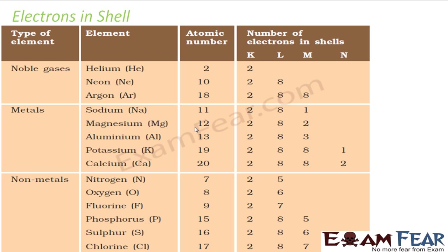Before we understand how NaCl is formed, let us understand the electron shell concept. Sodium has atomic number 11, which means it has KLM shells. Just understand this: 11 electrons are distributed as 2 in the K shell, 8 in the L shell, and 1 in the M shell.